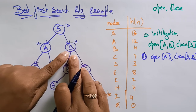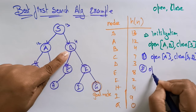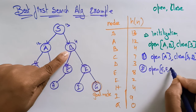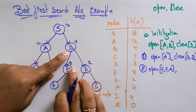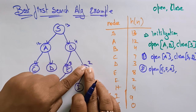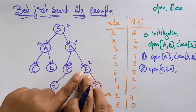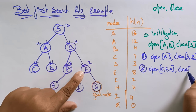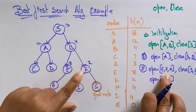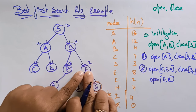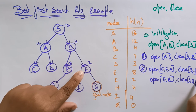Now expanding B: the successors of B are E and F. Place E and F on the open list — A is already there. The heuristic value of E is 8 and F is 2. F has the least heuristic value, so we take F from the open list and place it in the closed list. The closed list is now: S, B, F.